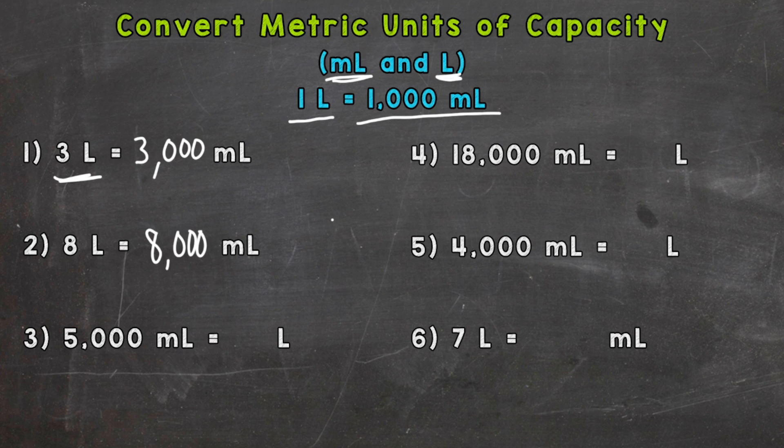Number three, we're going to go the opposite way. We have five thousand milliliters and we're converting it to liters. We have five thousand and we need to split it into groups of a thousand — each one of those groups of a thousand is a liter. So we need to do five thousand divided by a thousand, and that gives us five liters.